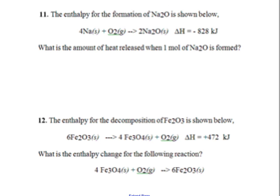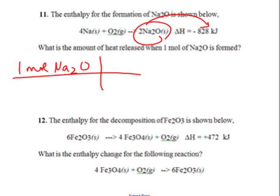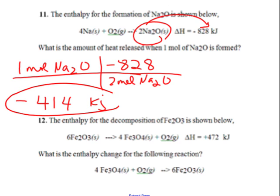You see why it's less? How many grams of propane would we have to combust to get a full 2221 kilojoules? Right, one mole of it, 44 grams. So this is not going to be a full mole of heat released. Got it? Let's go on to the next one. These are pretty easy, these are really really easy. It says the enthalpy for the formation of Na2O is shown below. So carefully look at it and look at all the coefficients, and that reaction is releasing 828 kilojoules. What is the amount of heat released when one mole of Na2O is formed?